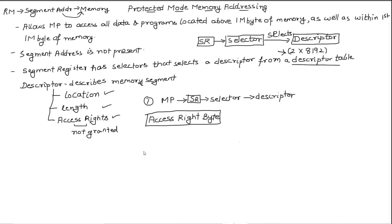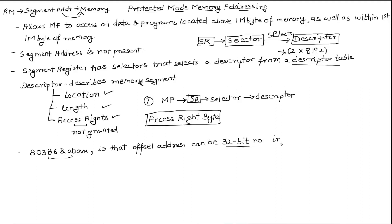There is one more important difference that applies to microprocessors above 80386, which includes Pentium processors, Core 2 processors, i3 processors, and so on. The difference is that the offset address — which is used to locate a particular instruction within a segment — can now be a 32-bit number instead of a 16-bit number in protected mode. In the next video we are going to briefly study about selectors and descriptors.